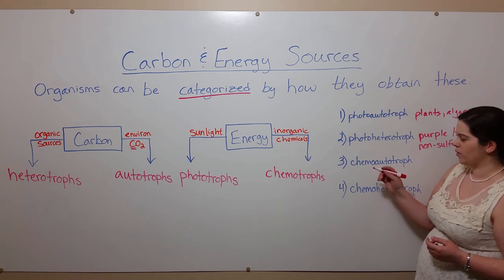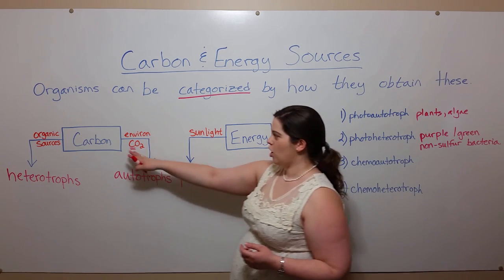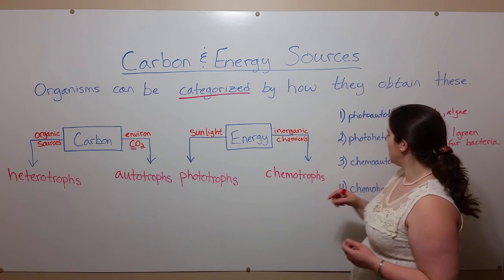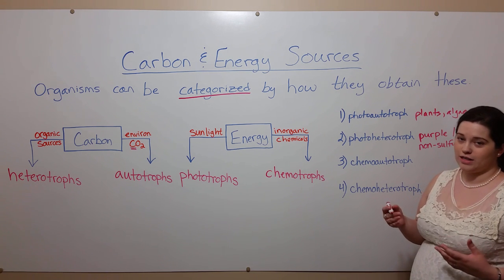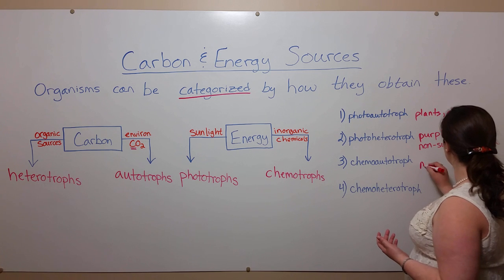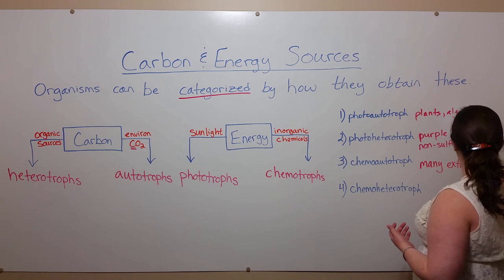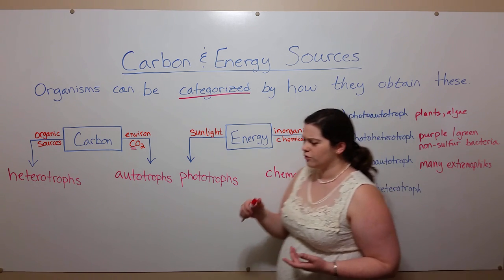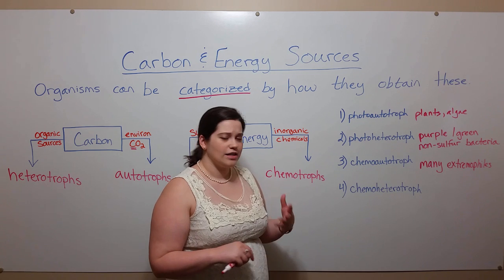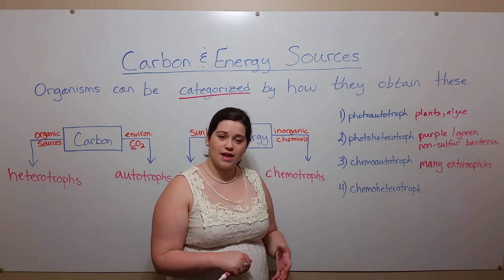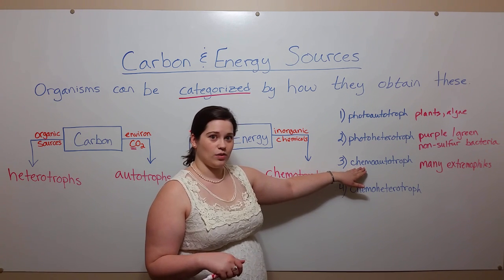Chemoautotrophs, the next category, includes organisms that get their energy from inorganic chemicals and their carbon from environmental carbon dioxide. Chemoautotrophs include a lot of the organisms we think of as extremophiles — things like halophiles, which are salt-loving bacteria, methanogens, and the bacteria and archaea that live in deep-sea ocean vents.